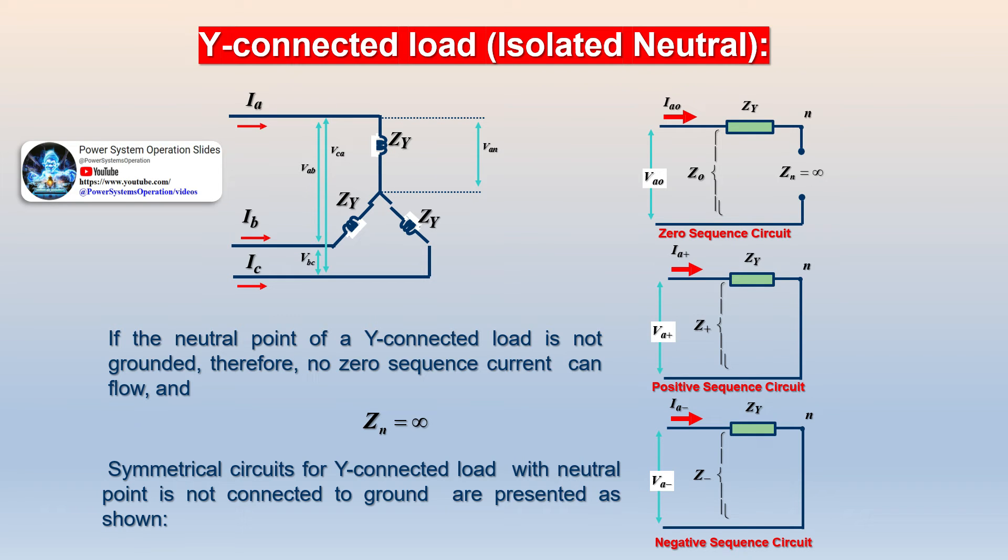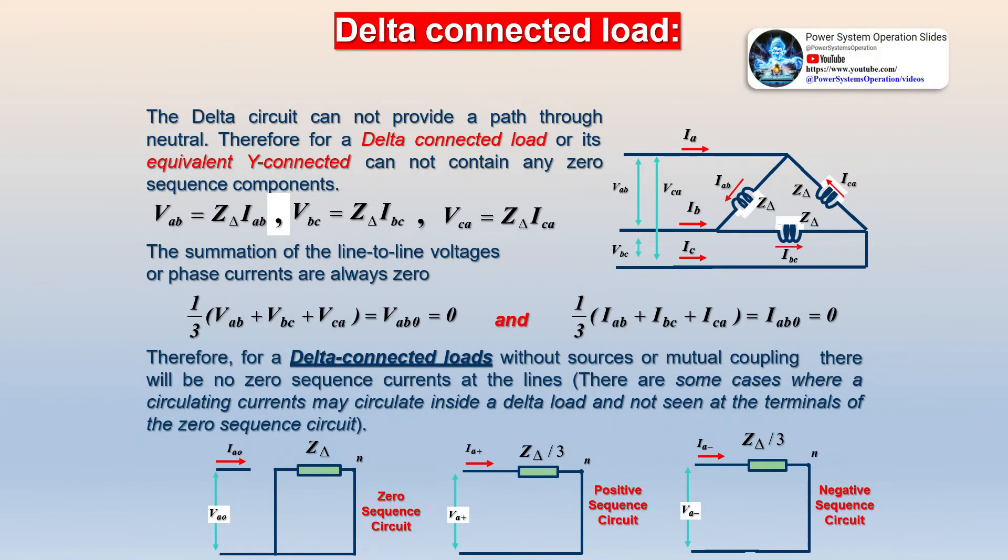Consider an unbalanced voltage phasor system shown in the figure below. Suppose that the phasors are represented by Va, Vb, and Vc and their phase sequence is Va, Vb, and Vc.